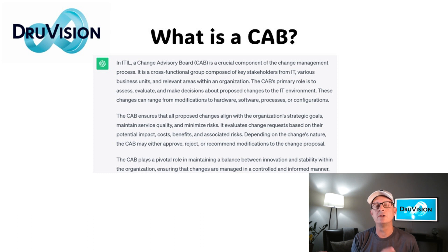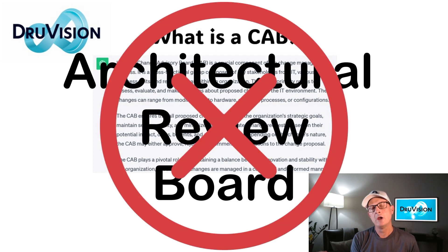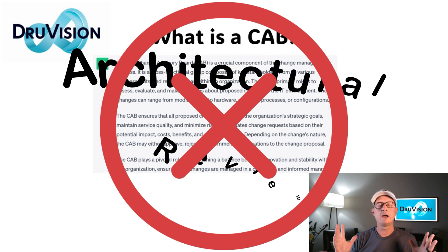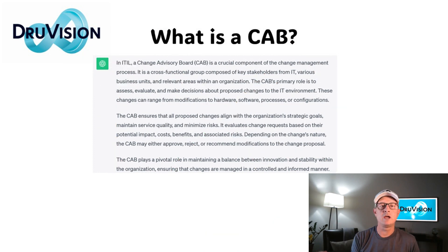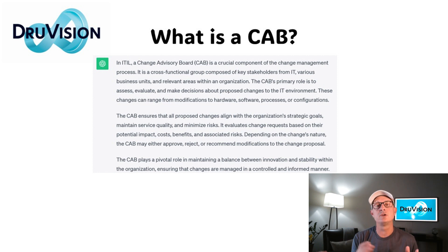Another point not in this definition: this is not an ARB — an Architectural Review Board, which I'll cover in a different episode. An ARB decides what types of software and solutions are appropriate for the enterprise in the context of the future direction of the company. In this particular case, the CAB is not that and shouldn't be confused as such. This is literally about proposed changes and the risk they present to the business.